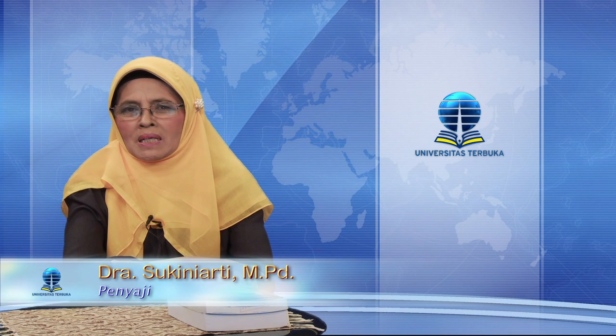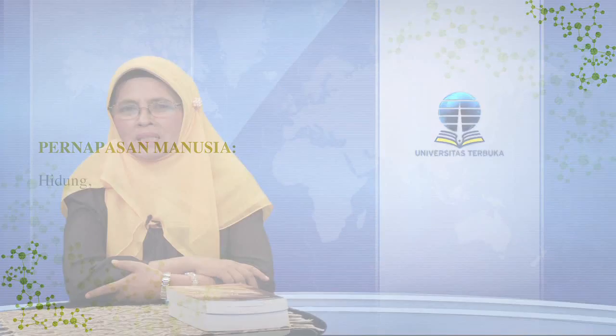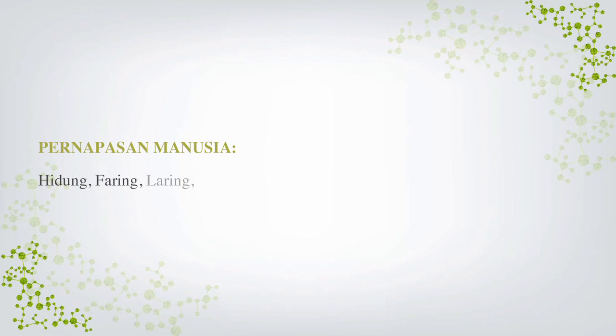Paru-paru merupakan struktur yang dimulai dari bronchi, yang merupakan cabang trachea, sampai dengan alveoli, sebagai tempat terjadinya pertukaran gas antara O2 dan CO2. Sistem pernapasan terdiri dari alat-alat pernapasan dan saluran pernapasan. Alat-alat pernapasan pada manusia adalah hidung, faring, laring, trachea, bronchus, bronchiolus, dan pulmo atau paru-paru.